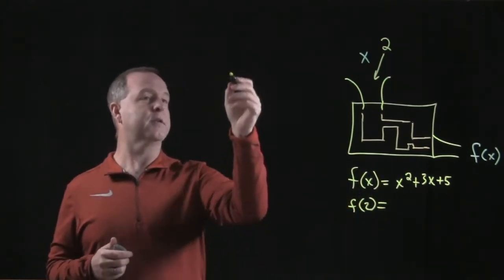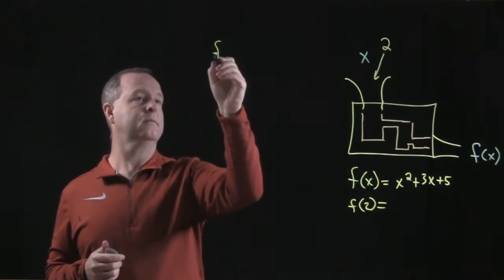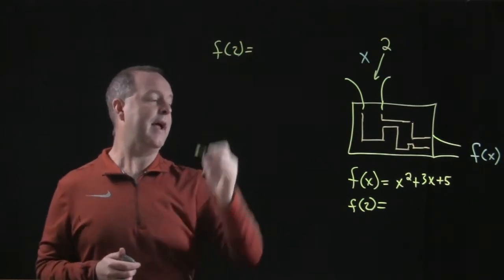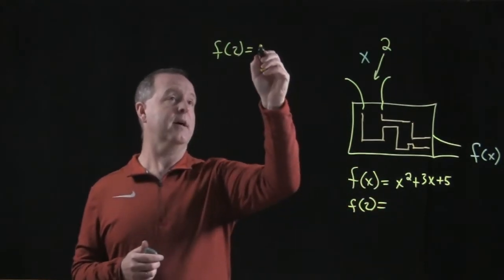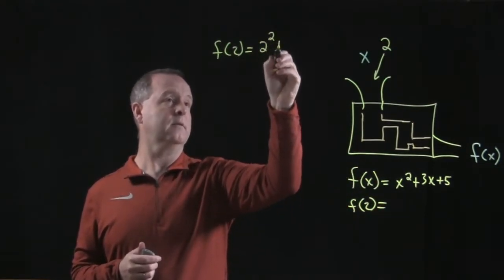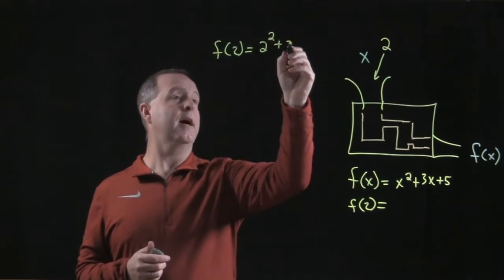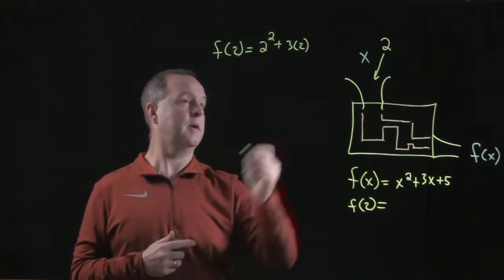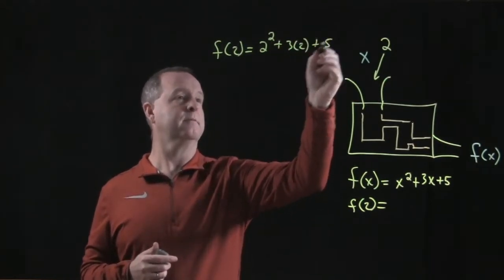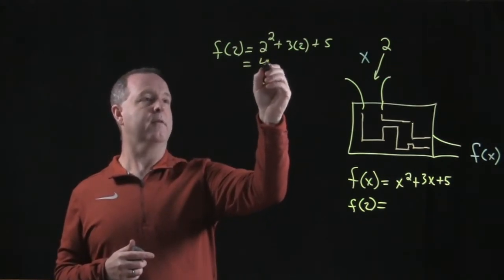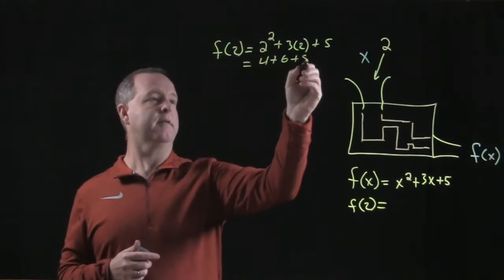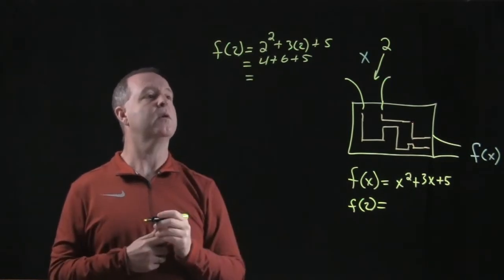Well, let's do it over here. So f of 2, everywhere I see an x value, I'll replace it with a 2. So this will become 2 squared, plus 3 times 2, plus 5. That equals 4 plus 6 plus 5, which equals 15.